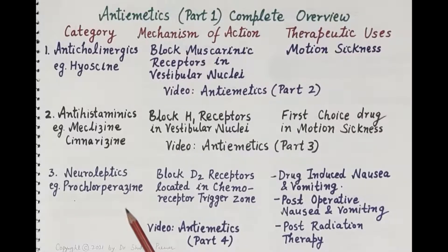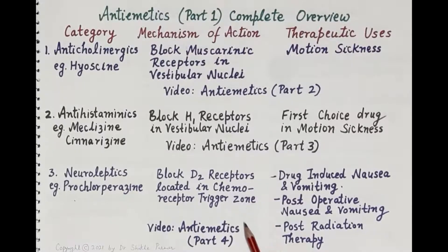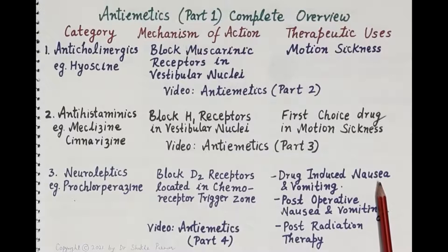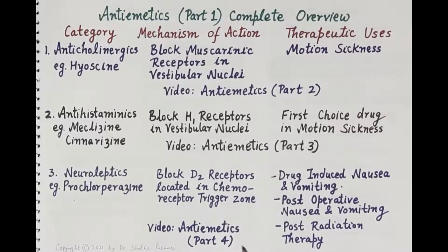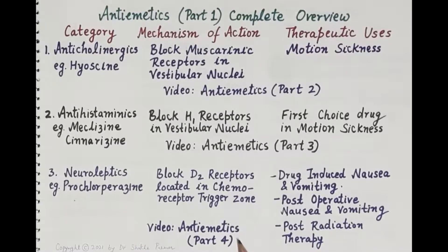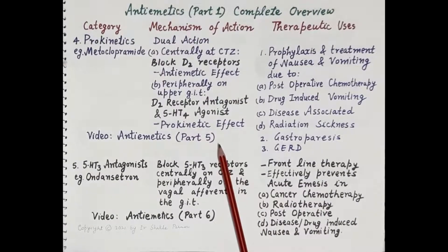The neuroleptics — for example, prochlorperazine — block dopamine D2 receptors in the chemoreceptor trigger zone. These drugs are useful in drug-induced nausea and vomiting, post-operative nausea and vomiting, and post-radiation therapy induced nausea and vomiting. They are not preferred due to extrapyramidal side effects. Complete information on neuroleptics as antiemetics is in the video on antiemetics part 4.